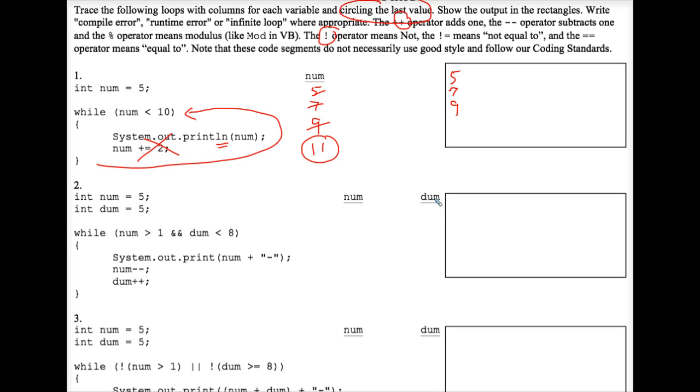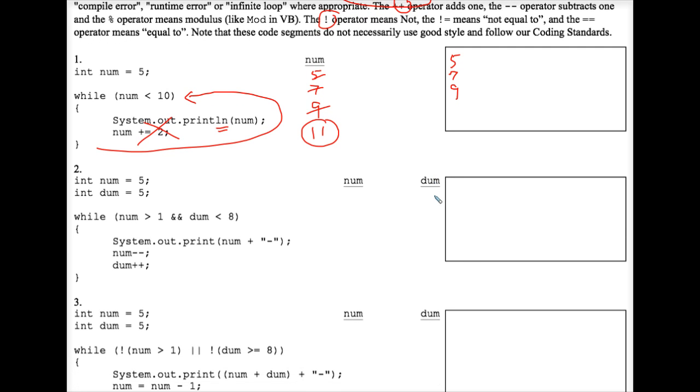Exercise number two. I'm going to start it, but I'm going to let you finish it for homework. Each variable initializes at five. The control expression where the double ampersand means and, the control expression is overall true, so we do indeed system out print num with a hyphen, so five hyphen. Num, and then num minus minuses, which means it bumps down to four. Num plus pluses, which means it goes up to six.